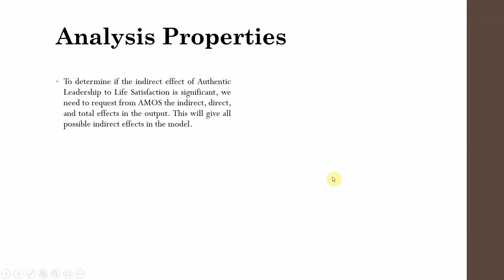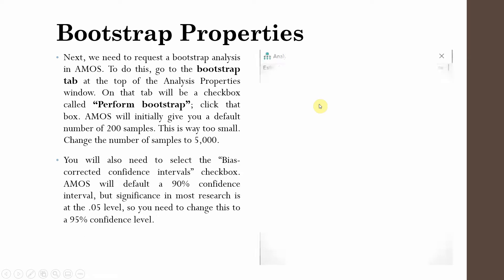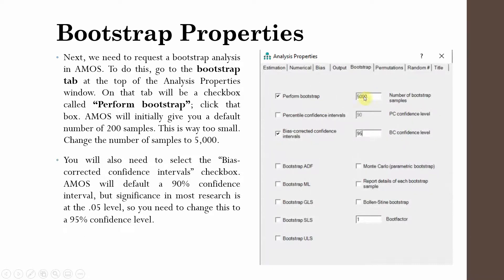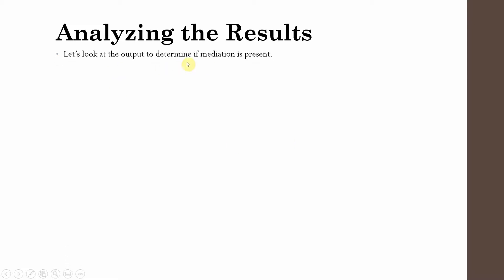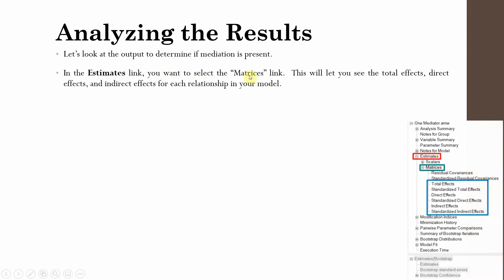To summarize the steps: make sure you have changed your Analysis Properties and selected indirect, direct, and total effects from the Output window. Then make sure you have the right bootstrap properties — 5,000 bootstrap samples and a 95% confidence interval. The Bootstrap tab is right next to the Output tab in Analysis Properties. To analyze the results, go to the Estimates link and select the Matrices link, which lets you see total effects, direct effects, and indirect effects for each relationship.